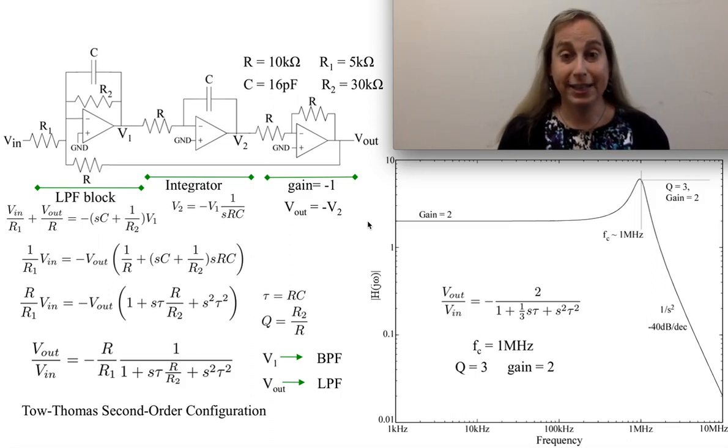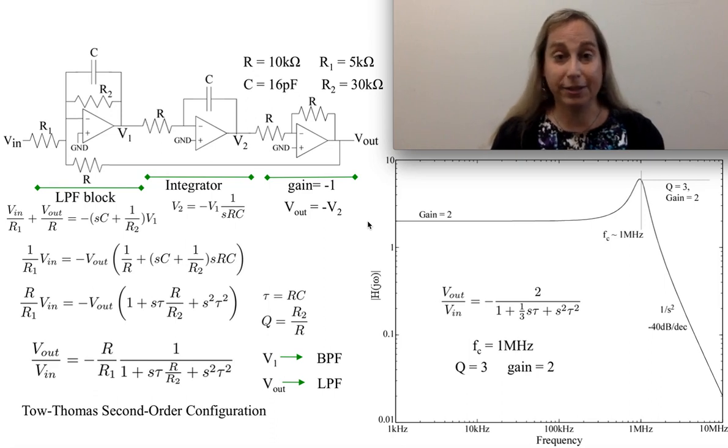Show an op-amp circuit, in this case, that has second-order dynamics, just resistors and capacitors. We're going to use three of them, but also it's a fairly straightforward circuit. This particular circuit topology is known as a Tao-Thomas configuration, a second-order configuration.